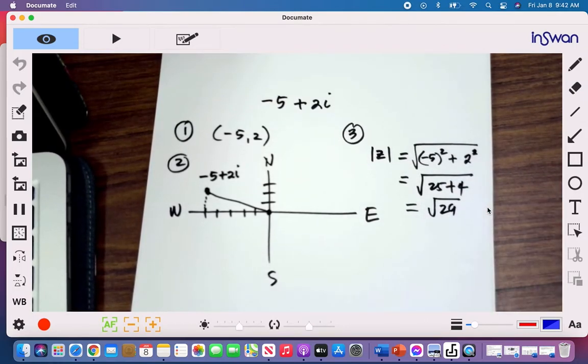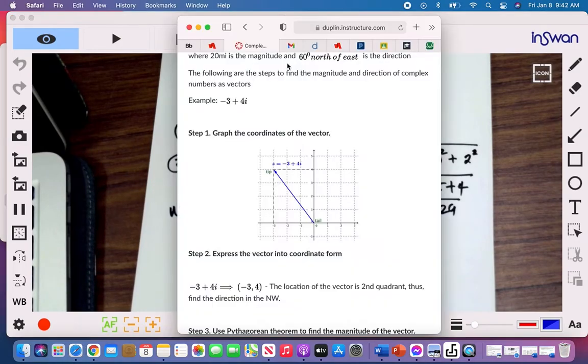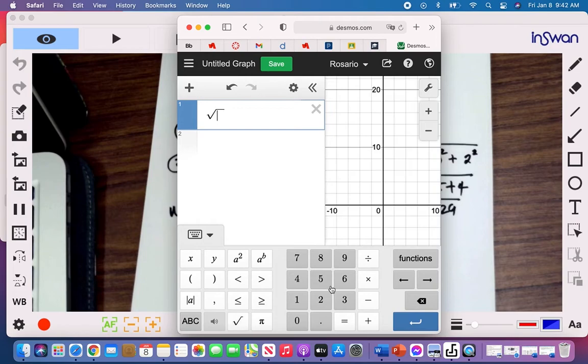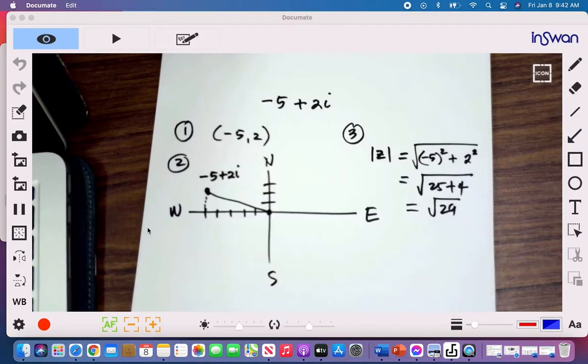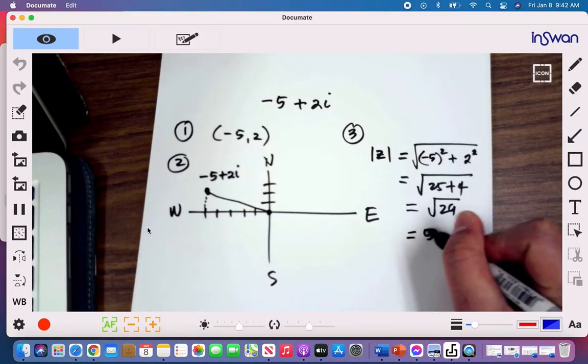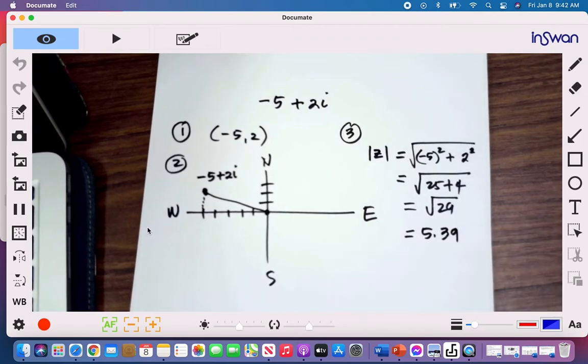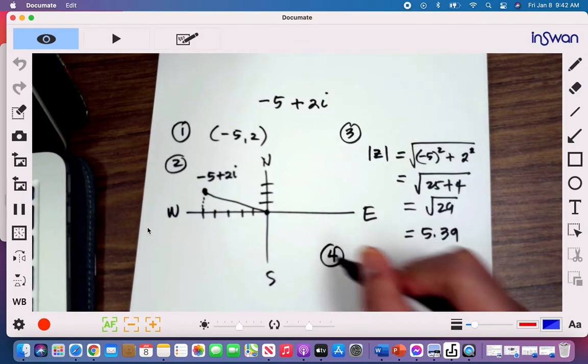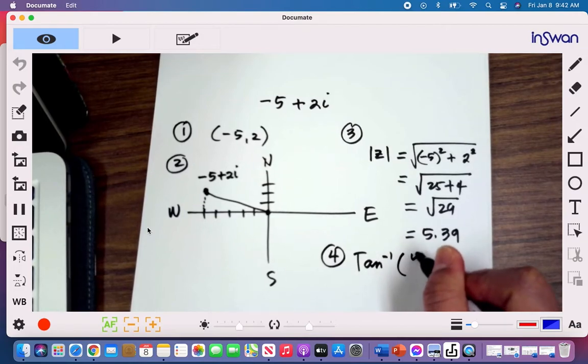If you want to find the decimal value of our magnitude, all you have to do is to make use of our calculator. So that's square root of 29. And that's 5.39. So the length of our vector is equivalent to 5.39. And so what's left for us to do is to find the direction.